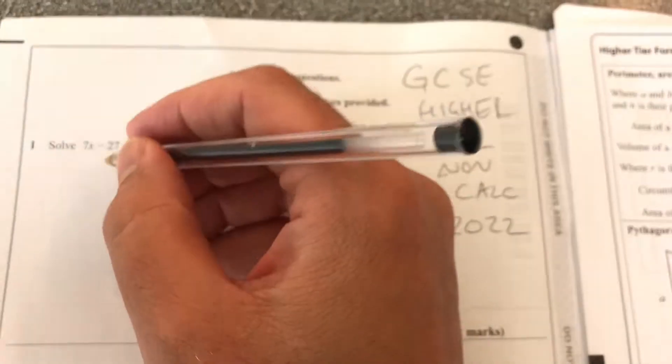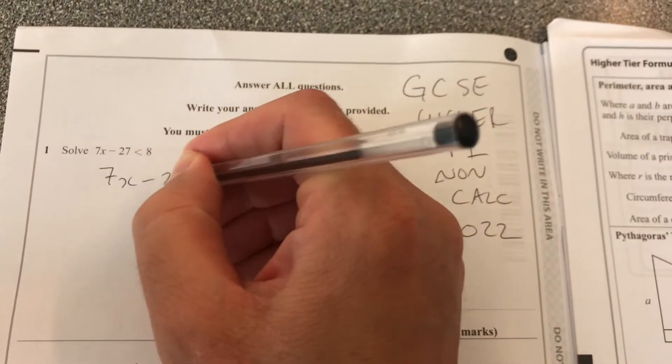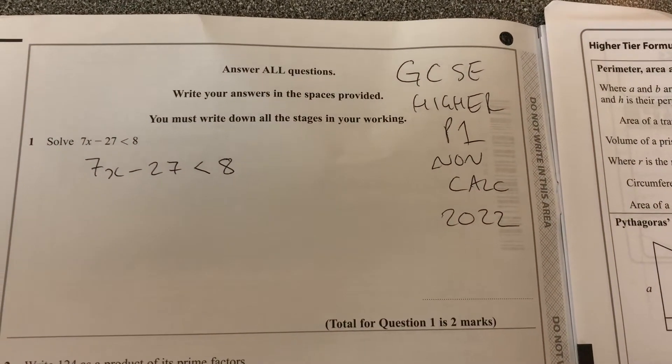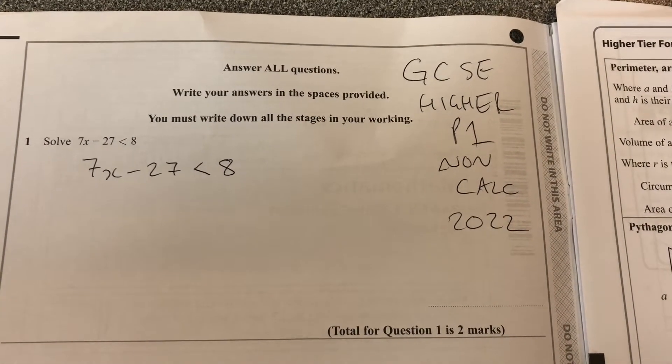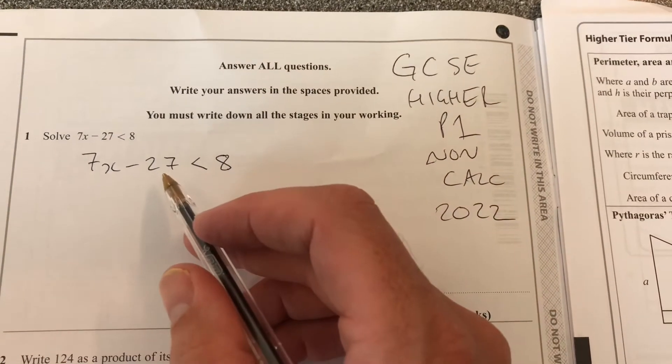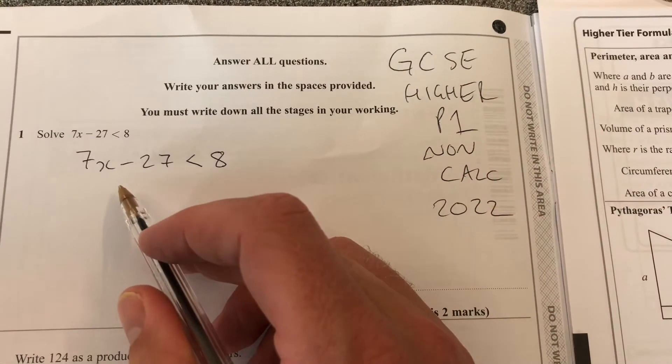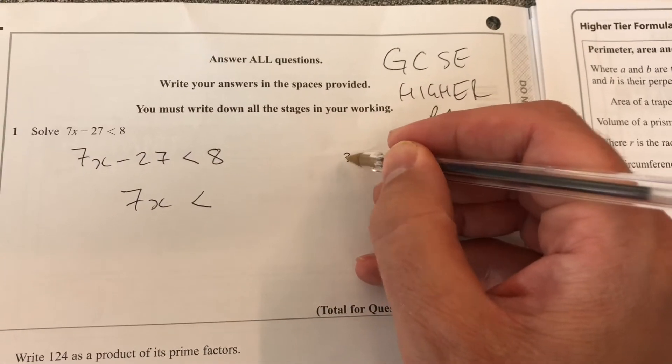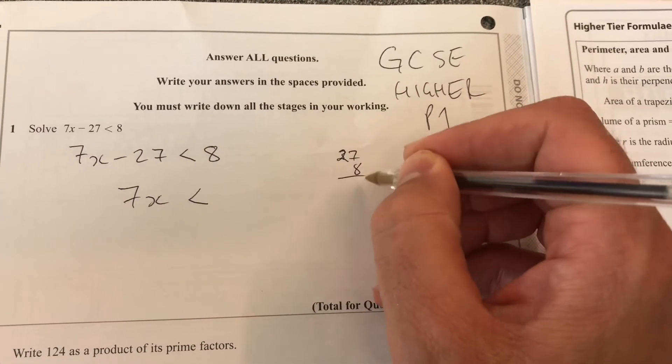Okay, so we've got 7x minus 27 less than 8. So it's an inequality. We solve it in the same way as an equation. Use the balance method, bring the numbers to the side, isolate the 7x there. So 7x less than whatever 27 plus 8 is.